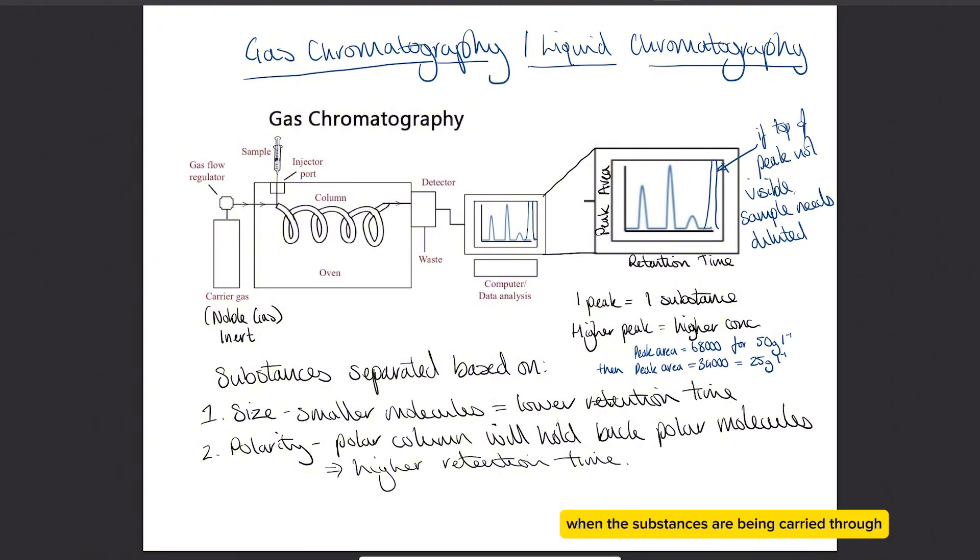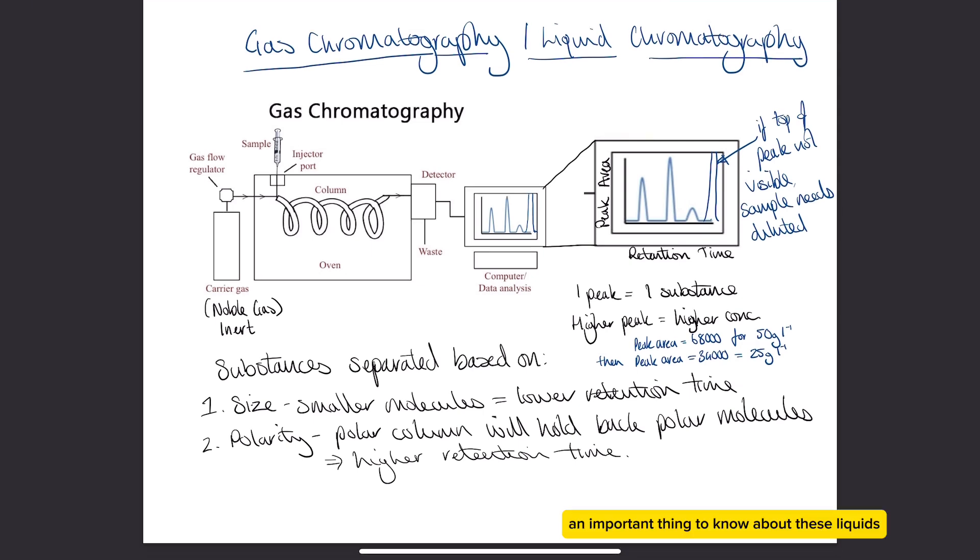When the substances are being carried through the column, they're carried by a gas in gas chromatography or a liquid in liquid chromatography. The important thing to note about these liquids and gases is that they must be inert, so they cannot interact with your sample, a bit like why we use the pencil in the TLC. The inert liquids or gases carry the substance through, and then they reach the detector separated out, and all these individual peaks are created for each individual substance.